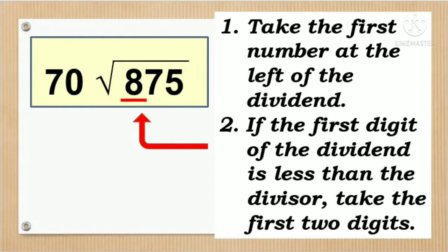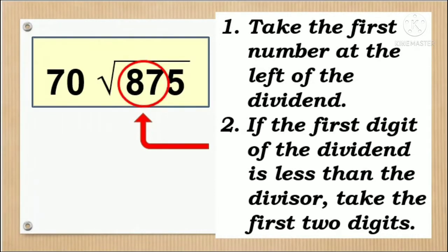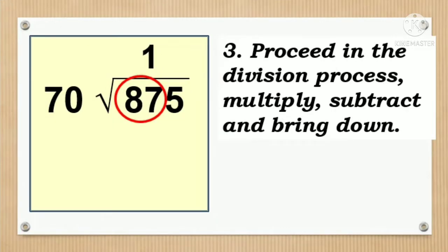Tandaan natin at sundan ang mga steps na ito sa pagdi-divide ng mga numbers. 875 divided by 70. Take the first number at the left of the dividend. If the first digit of the dividend is less than the divisor, take the first two digits. Proceed in the division process, multiply, subtract, and bring down.